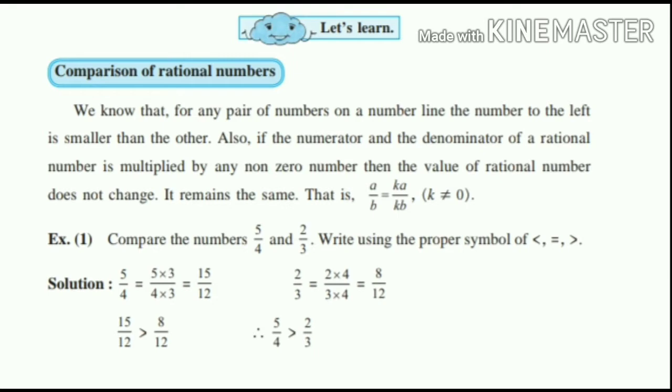So, suppose here is the number A by B. If we multiply K on both denominator and numerator, then this K K will get cancelled and we get the original number A by B. They are saying that if we multiply with any non-zero number, then it remains the same. So we multiplied here by K.